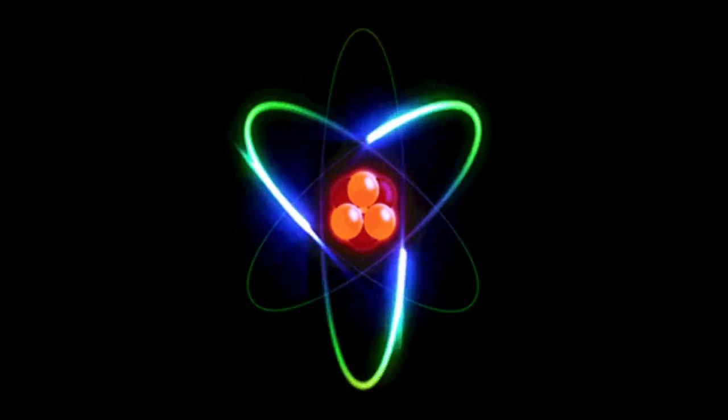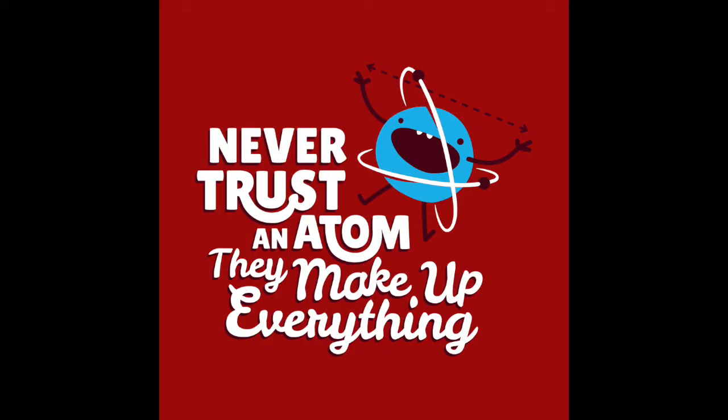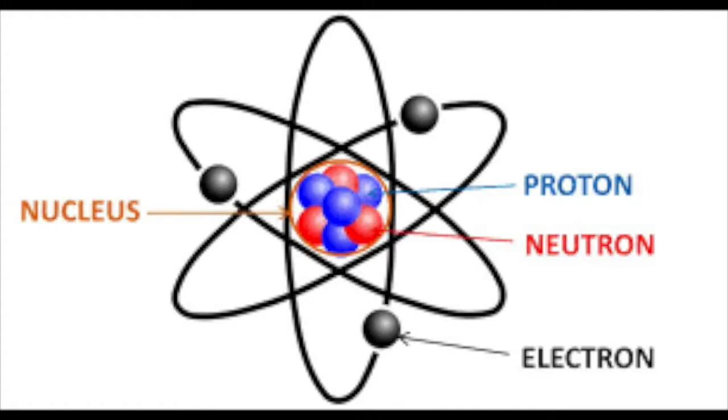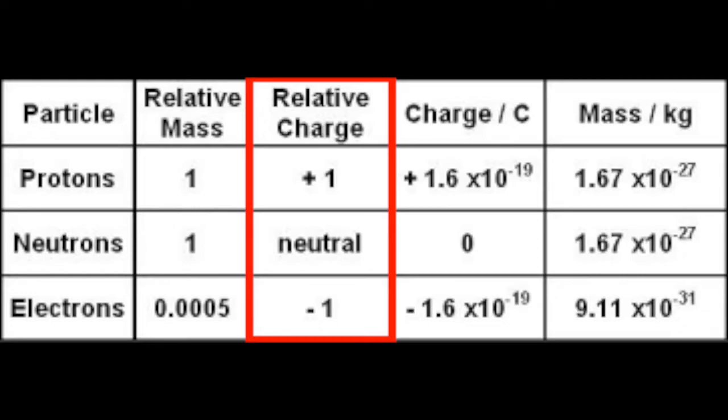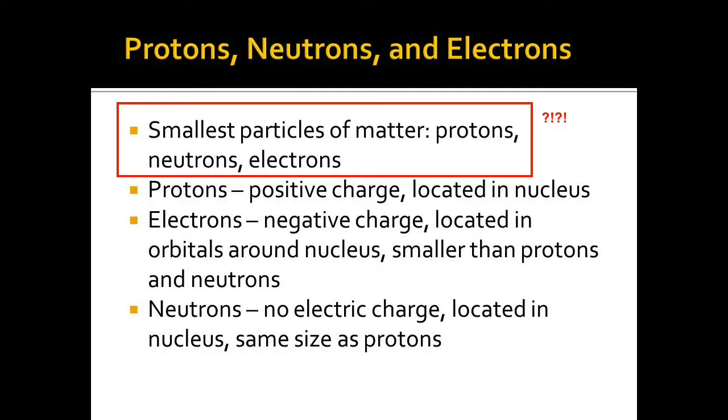You have probably been told that atoms make up everything. Hopefully, you were also told that those atoms are made up of smaller particles called protons, neutrons, and electrons, with each bearing a charge of positive one, zero, and negative one, respectively. You were likely told that these are the smallest subatomic particles that make up all matter. Well, guess what? You've been told wrong.